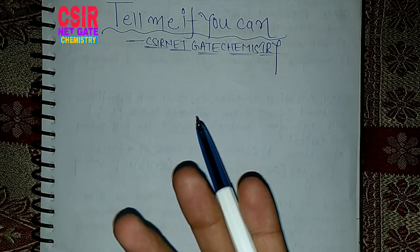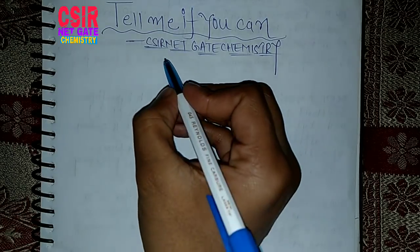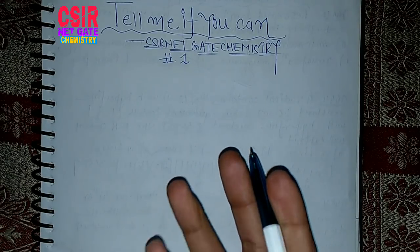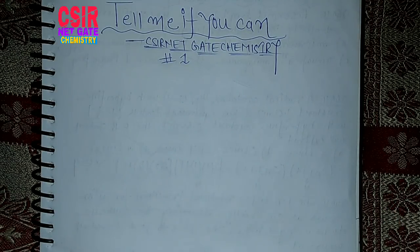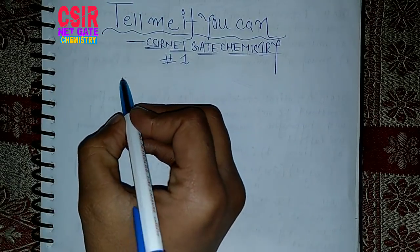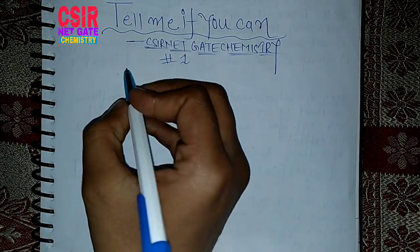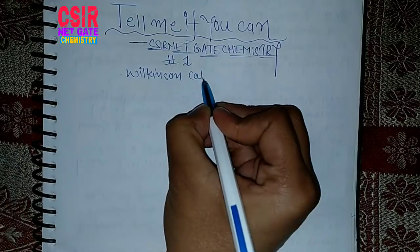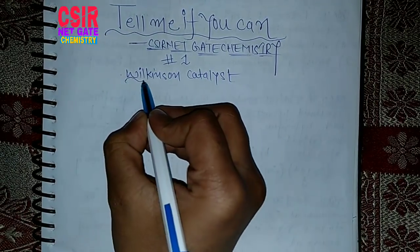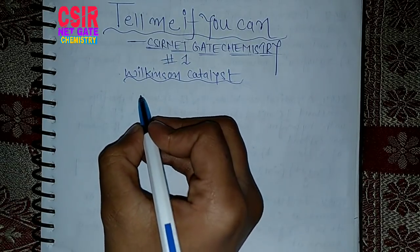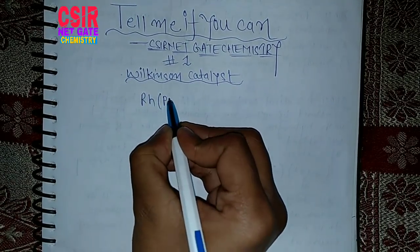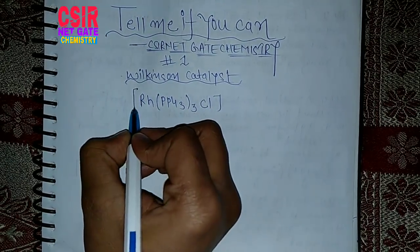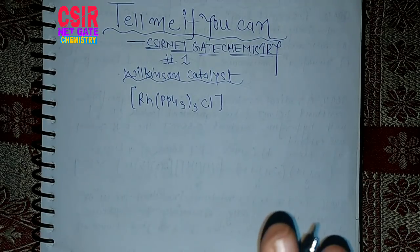To sharpen your thinking, this series will be very beneficial. In this first episode, I am asking you a question — let's see how many people can answer it. The first question is about the very famous Wilkinson's catalyst, used for homogeneous hydrogenation. This catalyst contains rhodium, PPh₃ (triphenylphosphine), and chlorine, and it is a square planar 16-electron species.